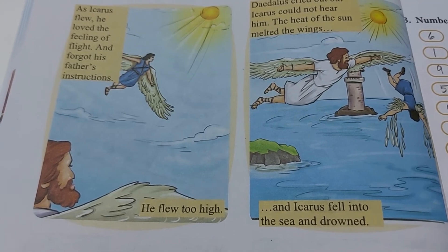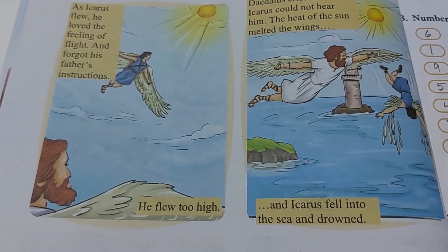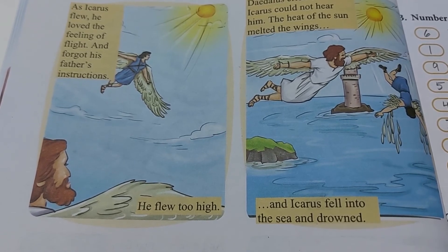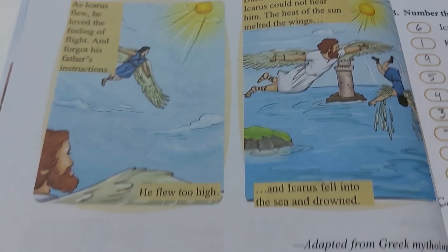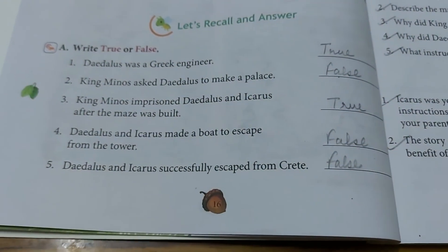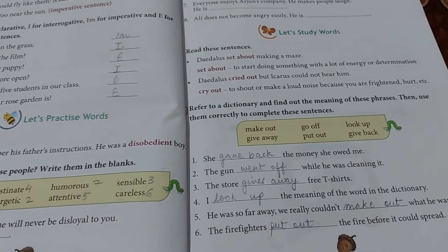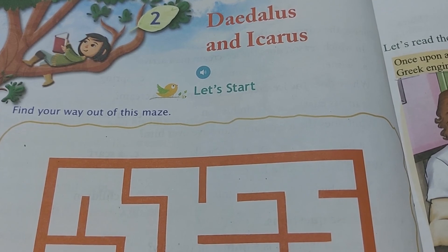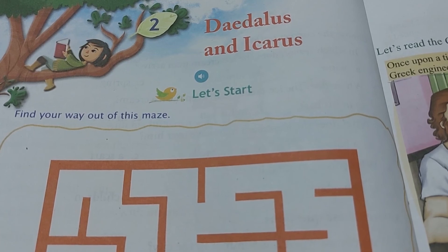Is story se kya lesson milta hai hume? Is story se hume ye lesson milta hai that we should listen to our elders, we should listen to our parents. Otherwise aise hi hoga humare saath. Toh jo bhi mammi papa bolta hai, elders bolte hain, unhne sunna chahiye, unki baat ko maanna chahiye. So this is the exercise class. I hope you all have understood the chapter very well. Agar aapko koi doubt hai, you can ask me in the comment section. Thank you, students.